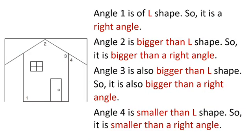Angle one is of L shape. So, it is a right angle. Angle two is bigger than L shape. So, we can say it is bigger than a right angle. Angle three is also bigger than L shape. So, it is also bigger than a right angle. Angle four is smaller than L shape. So, it is smaller than a right angle.